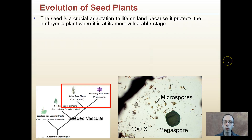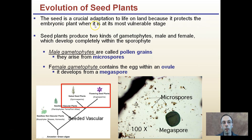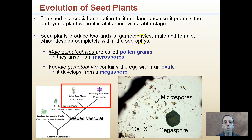The evolution of seed plants: the seed is a critical adaptation to life on land because it protects the embryonic plant when it is at its most vulnerable stage of life. Seed plants produce two kinds of gametophytes — male and female — which develop completely within the sporophyte.